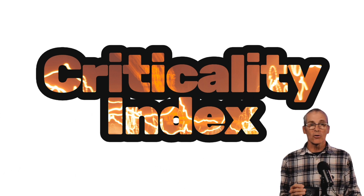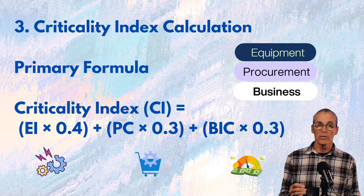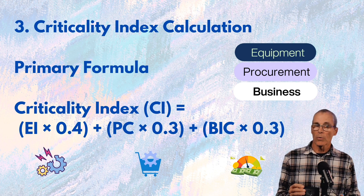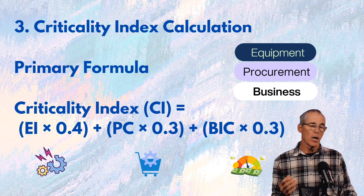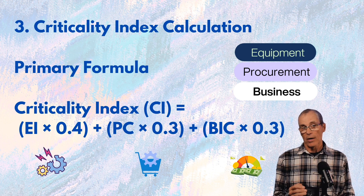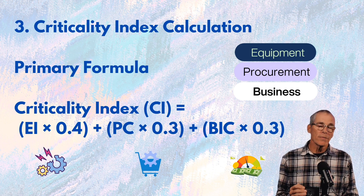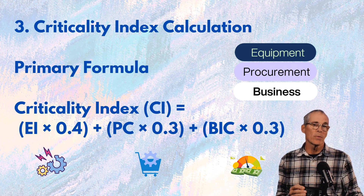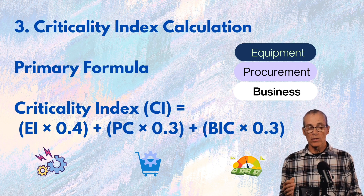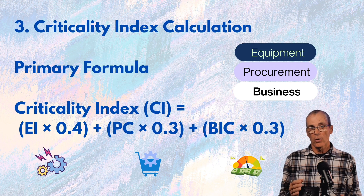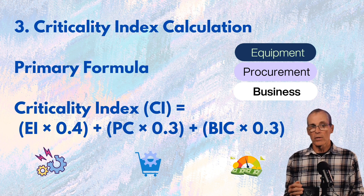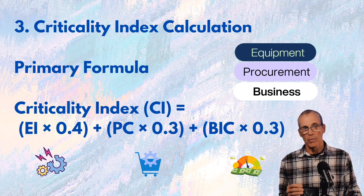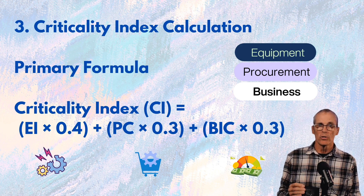Now we're going to get to the Criticality Index, putting all these numbers together. We've got an Equipment Index, a Procurement Cost index, and a Business Impact Cost index, and we're going to weight those. They each have a fraction — 0.4, 0.3, 0.3 — so it totals up to one. You can shift that weighting so 40% goes to equipment impact, or you can move 40% over to business impact. This is up to your judgment.